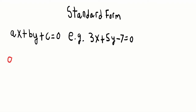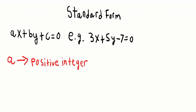The restriction for A is that it must be a positive integer. That means A must be a whole number greater than 0. It can't be a negative number, it can't be a fraction, it can't be a decimal — it has to be a positive integer.